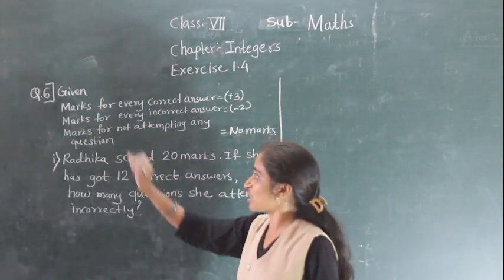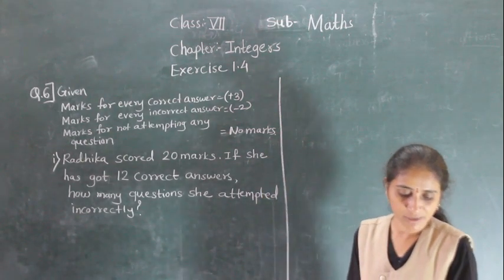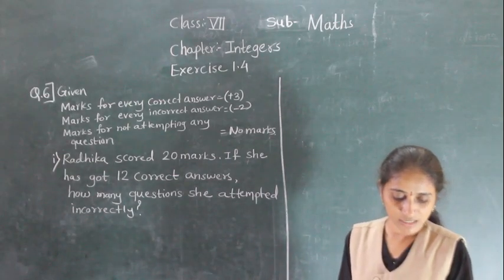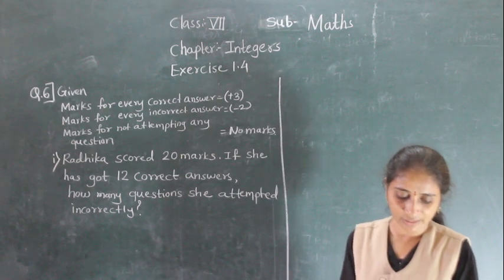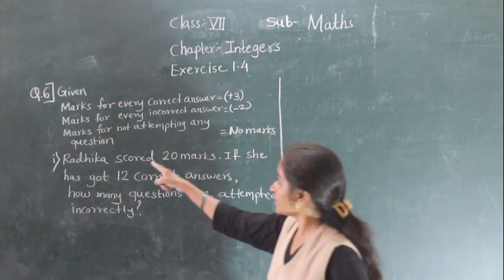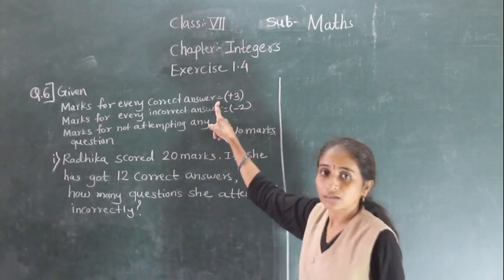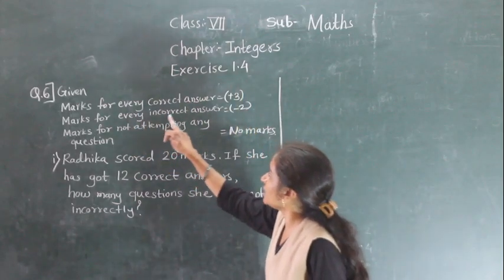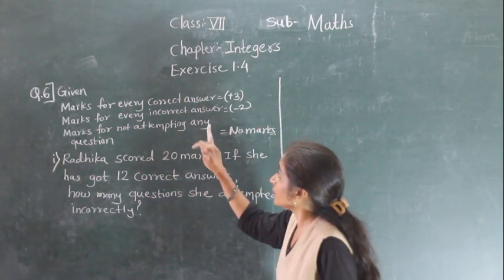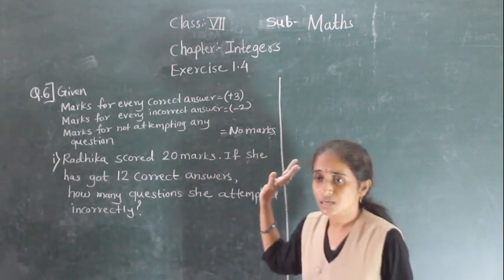Let's move to question number 6. In a class test, plus 3 marks are given for every correct answer and minus 2 for every incorrect answer, and no marks for not attempting any question — that is 0 marks.